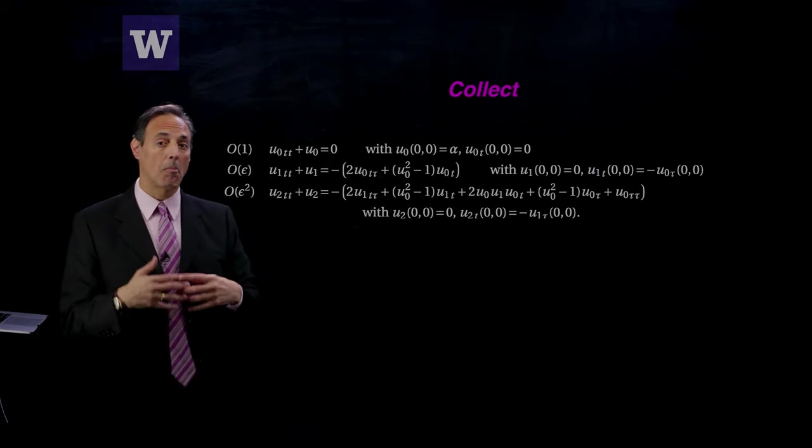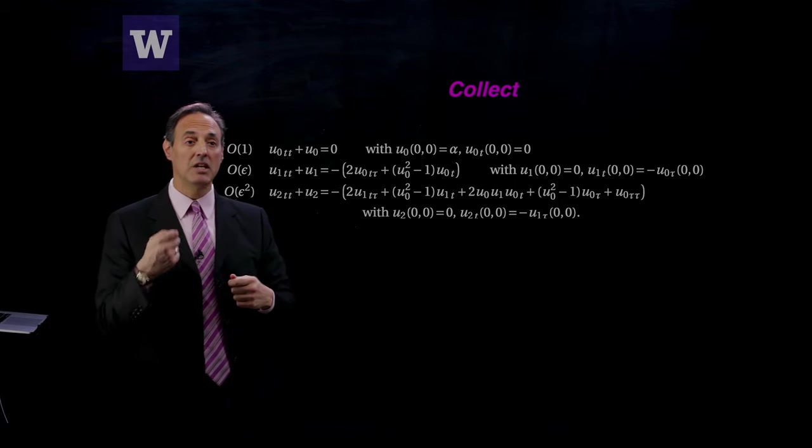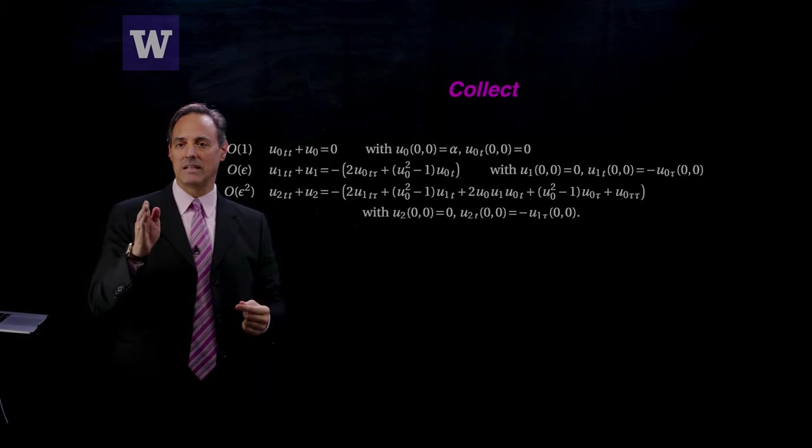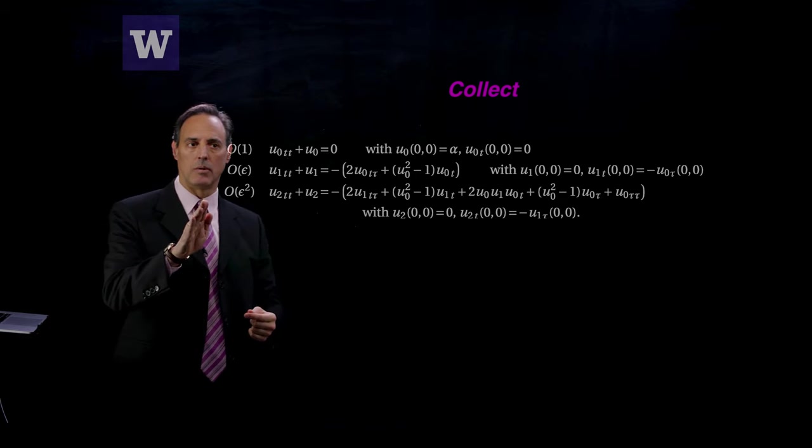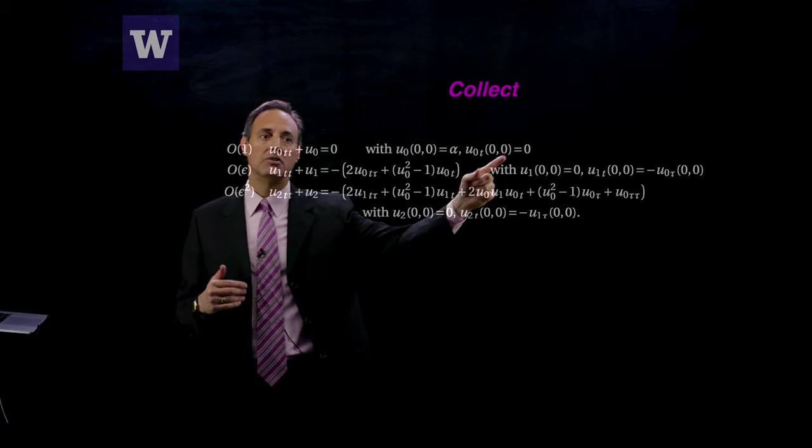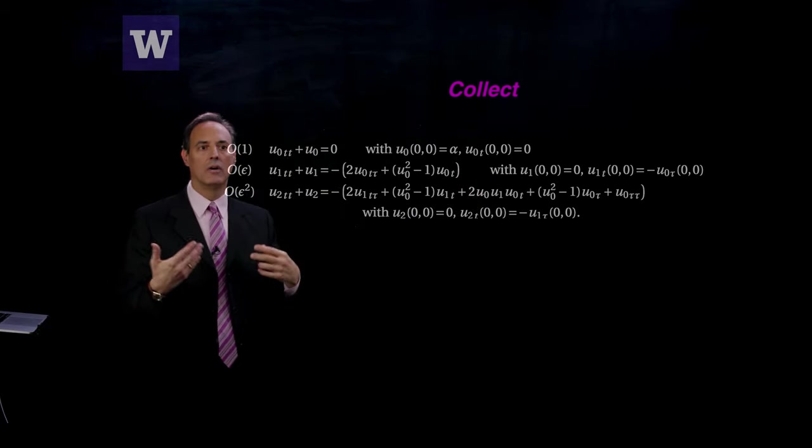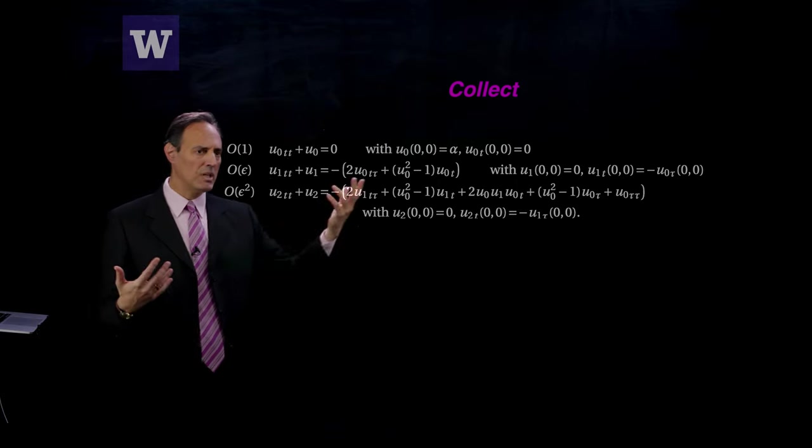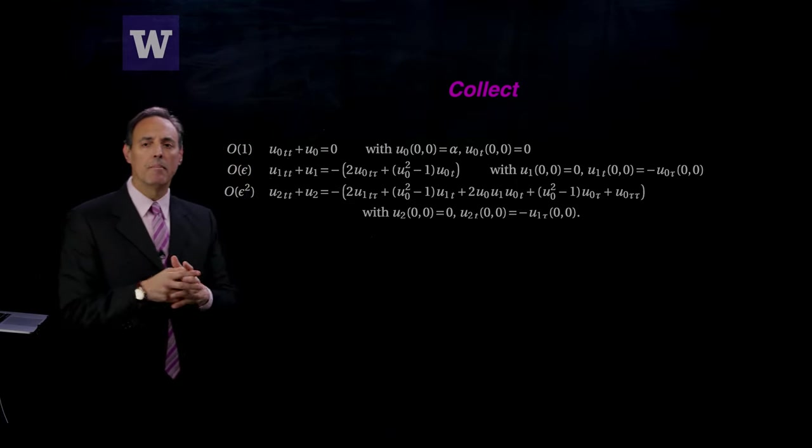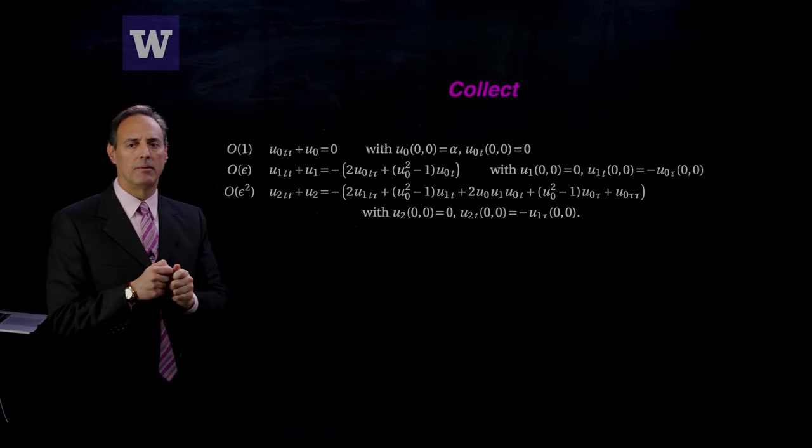The initial conditions are parameterized by the value of t and tau. So u0(0,0) means at t equals 0 and tau equals 0, I have alpha. And u0_t at (0,0) equals 0. I have some alpha which is the initial amplitude, and it starts from rest. Remember, u0 is a function of two variables, t and tau.